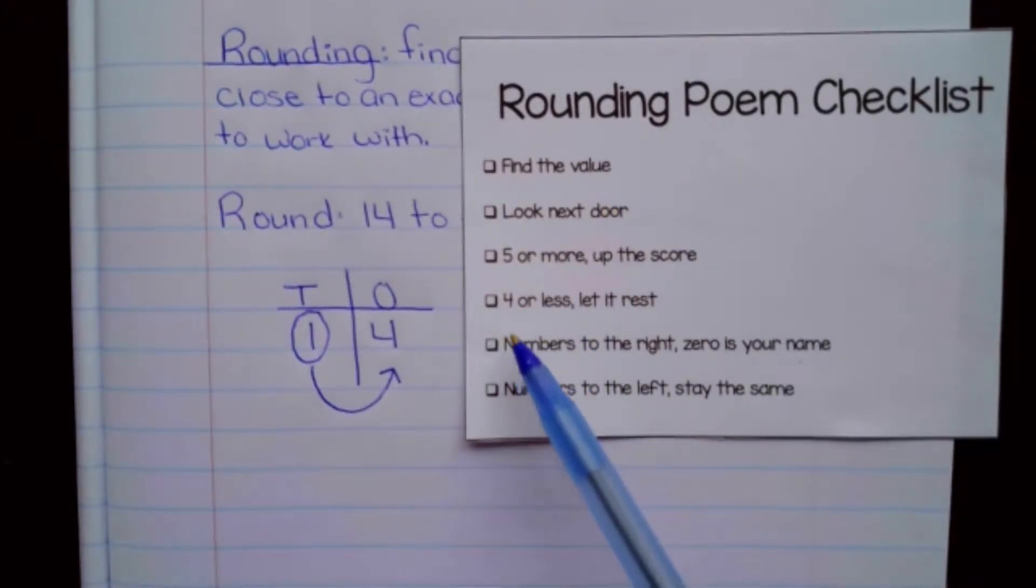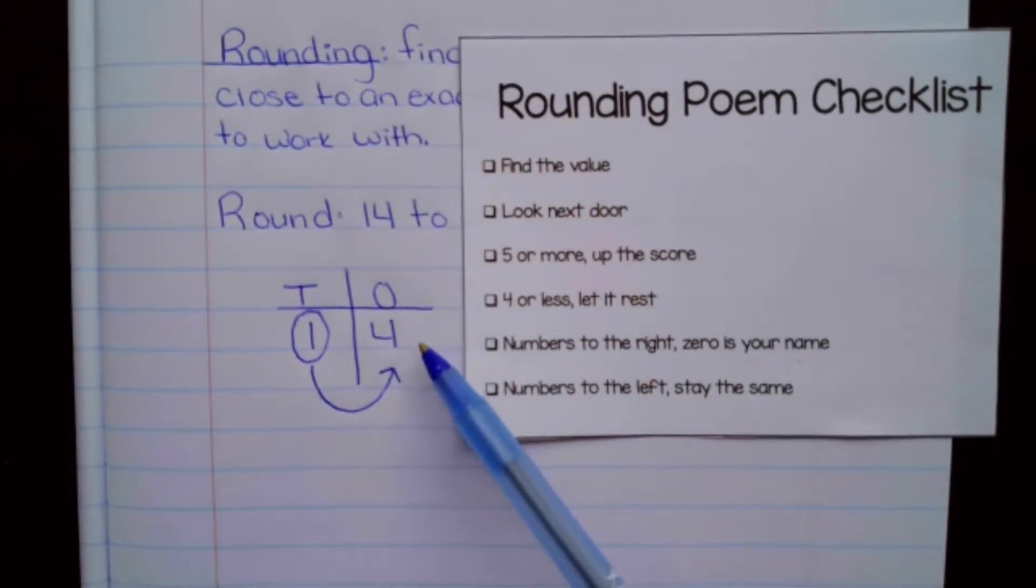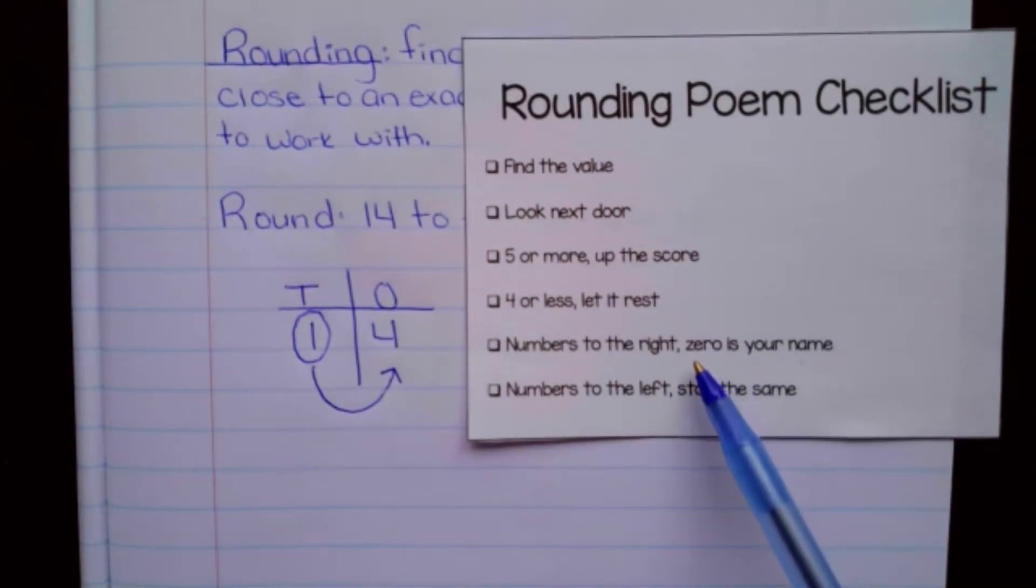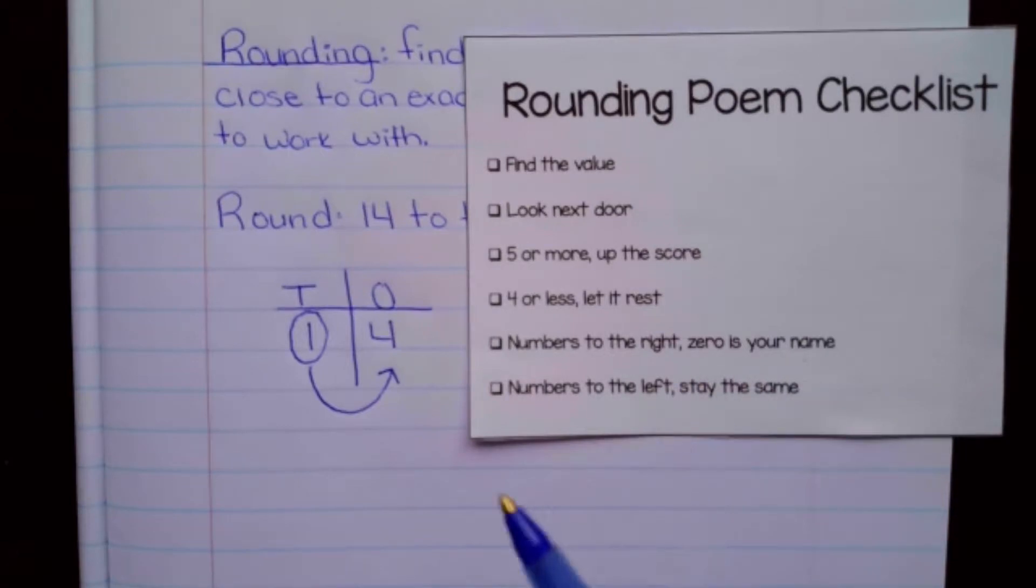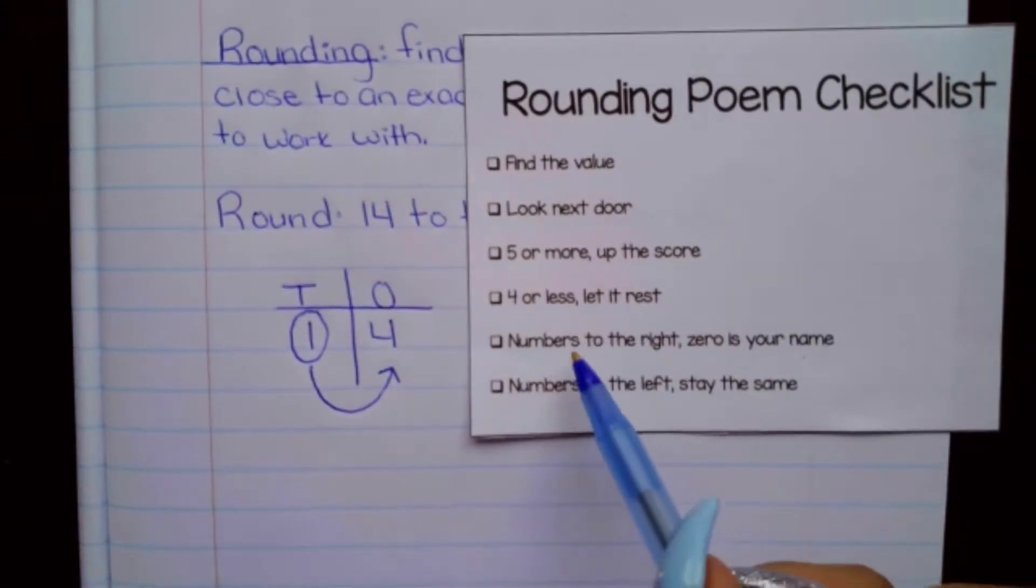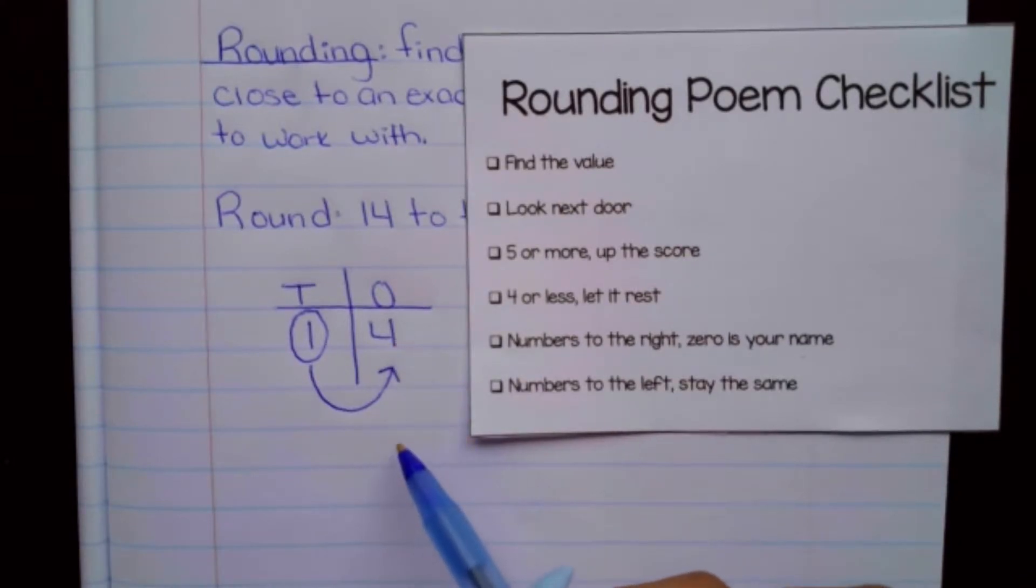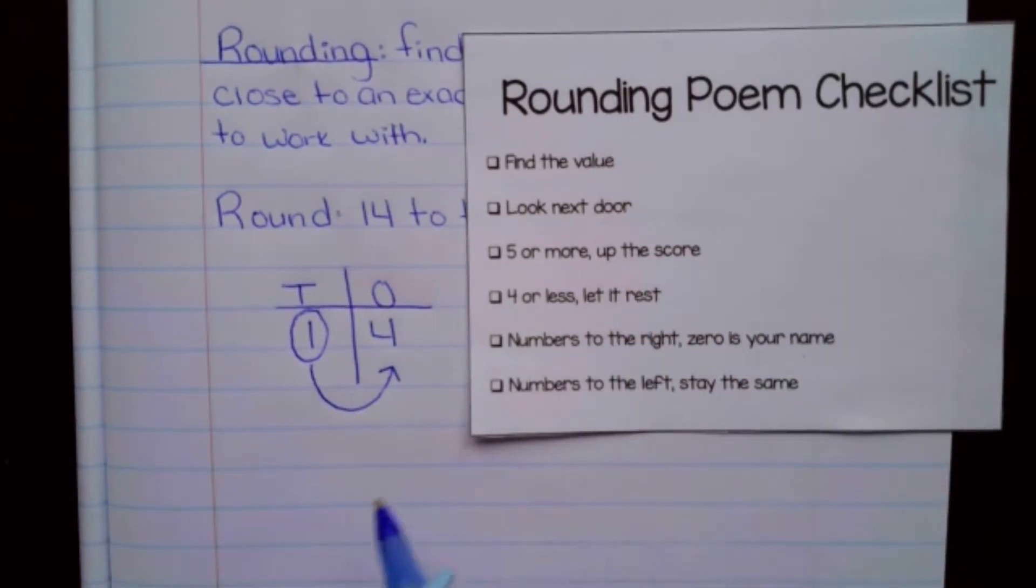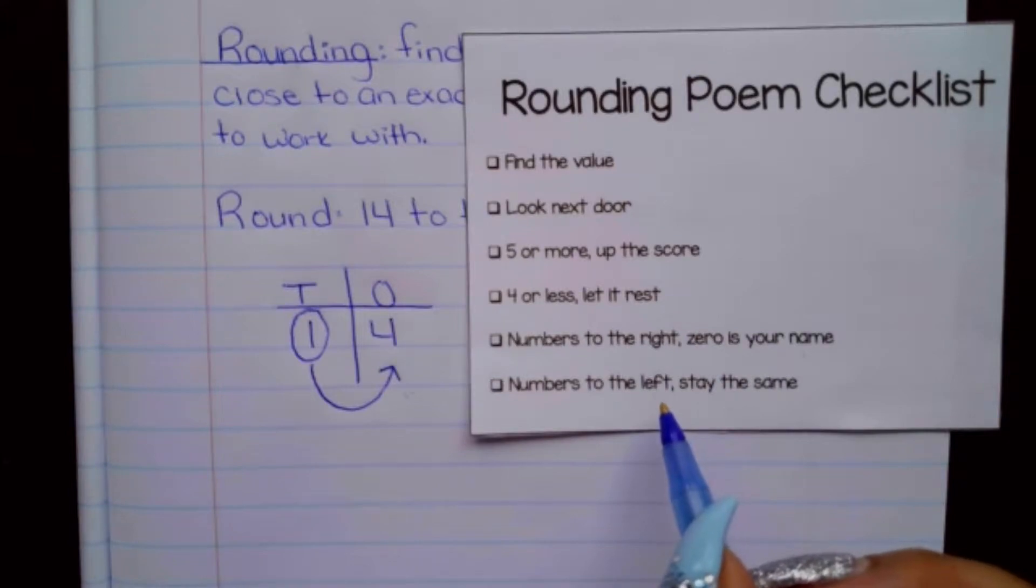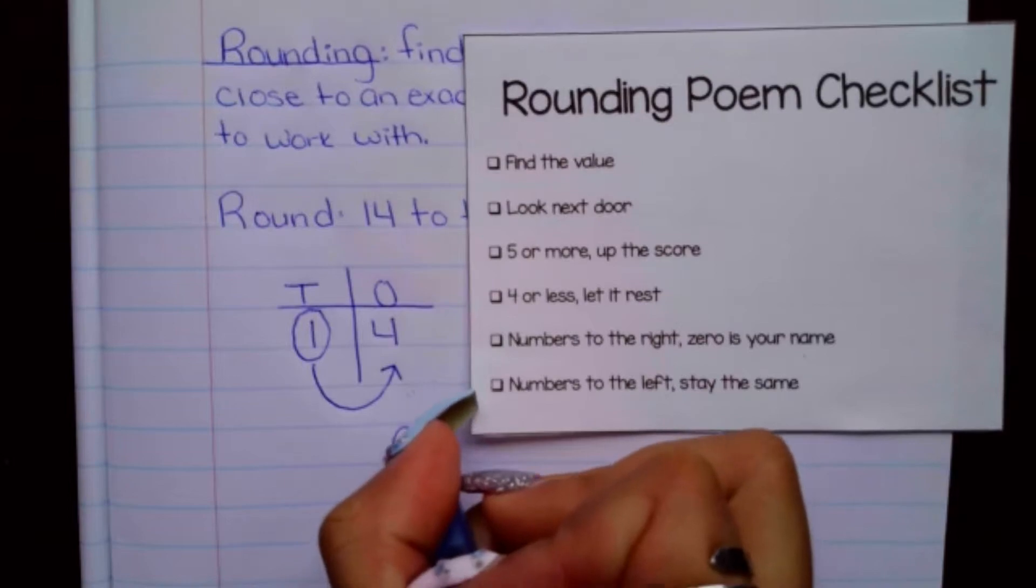So our next step here says, for less, let it rest. So here's where it gets a little bit confusing because it does say let it rest, but we have to read into the next step here. And this is where a lot of scholars end up not knowing whether the number should change, if it should stay the same, or what exactly they're supposed to do with it. So the next step says, numbers to the right, zero is your name. So if it's four or less, although it's saying to let it rest, you still need to change this number into zero. Numbers to the left stay the same. So this does not get changed.